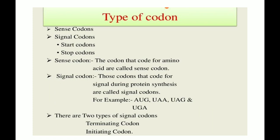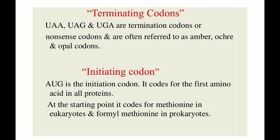The terminating codon is also called the nonsense codon. UAA, UAG, and UGA are termination codons or nonsense codons, often referred to as amber or opal codons. The initiating codon codes for the first amino acid in all proteins.